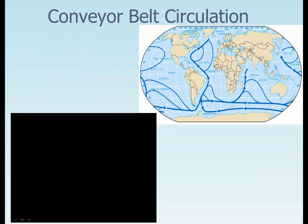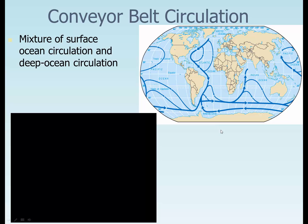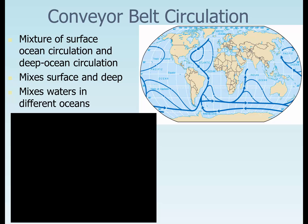The conveyor belt circulation — this is how it all starts and moves. Cold water forms up here and sinks down, cold water forms here and sinks down. It's a mixture of surface ocean circulation where warm water moves on the surface and deep water moves at the bottom. It mixes surface water with deep water, pulls oxygen down, brings nutrients up, and mixes water between different oceans — North Atlantic water mixing with Indian water, mixing with Pacific water, which mixes back with Atlantic water. The oceans are interconnected — we really do have one ocean.